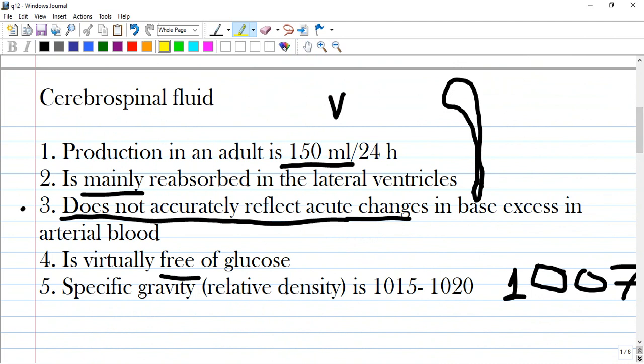Cerebrospinal fluid. You see options like production in an adult is 150 ml per 24 hours - it is wrong. It is mainly reabsorbed in the lateral ventricles - also wrong. It does not accurately reflect acute changes in base excess in arterial blood - it is correct.